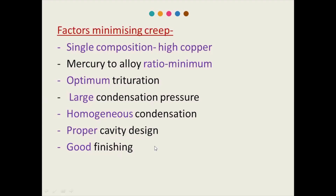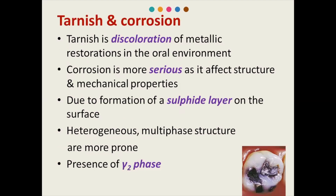The next property is tarnish and corrosion. Tarnish is a discoloration of the metallic restoration in the oral environment. If the tarnish layer is not removed by scaling and polishing, corrosion may occur, which is more serious as it affects the structure and mechanical properties. It happens due to the formation of a sulphide layer on the surface.